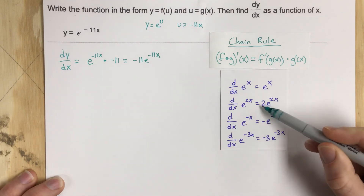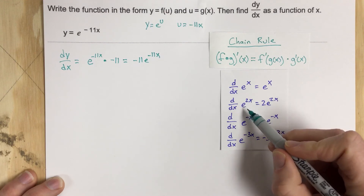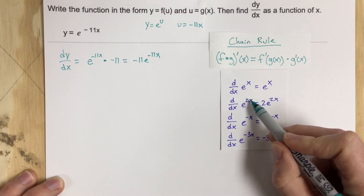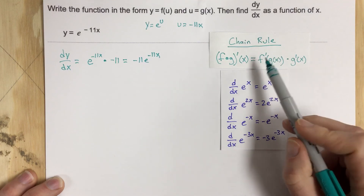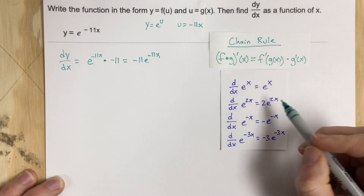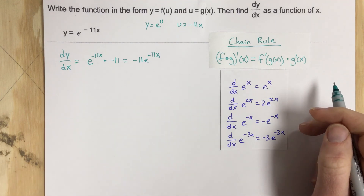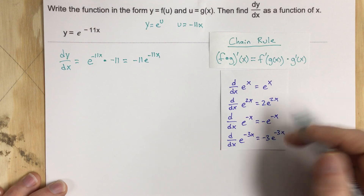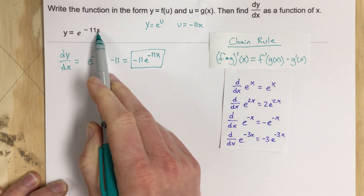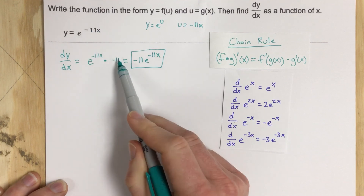Now let's compare that to what we've been doing this whole time. e to the 2x is actually a function inside of a function. So we do the derivative of the outside, which is e to the 2x, times the derivative of the inside, which is 2, and we multiply them. That's the chain rule — take the derivative of the outside function times the derivative of the inside function. So all of these things we've been doing with base e exponentials, we've been using the chain rule and just didn't know it. This is the derivative for e to the negative 11x: derivative of the outside, e to the negative 11x, times the derivative of the inside, negative 11.